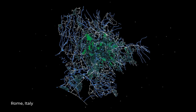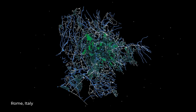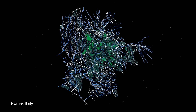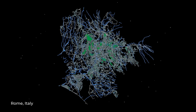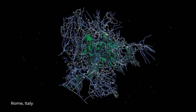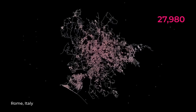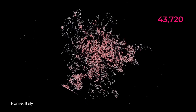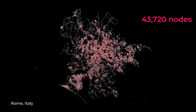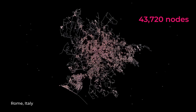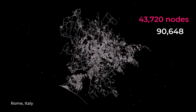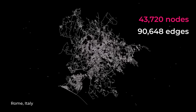This is Rome. And you know what they say: all the roads of Rome form a graph with 40,720 nodes and 90,648 edges. But what does that actually mean?